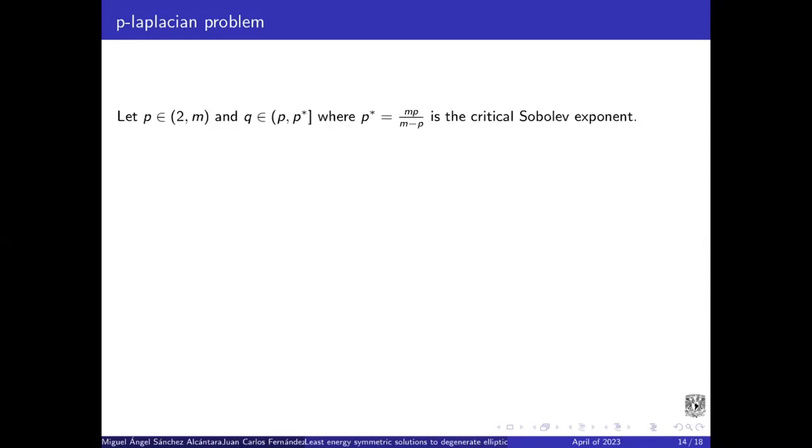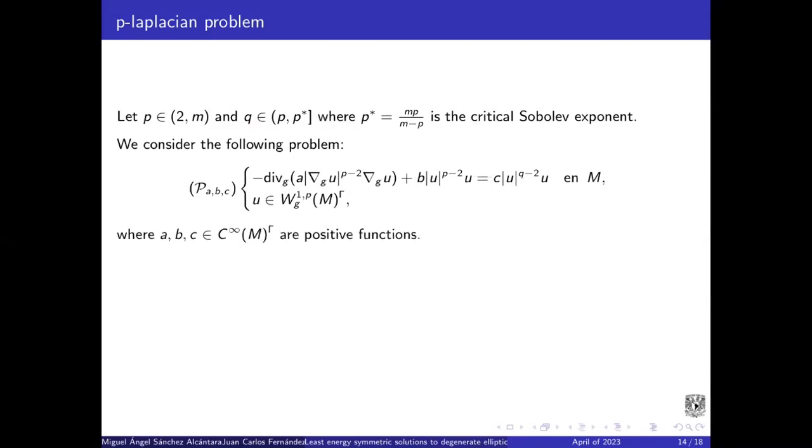Let p be a number on this interval and Q a number on this interval. And we consider the following problem. A, b, c are positive smooth functions that are Gamma invariant. And we say that a function on this space is a weak solution of this problem if for every element of the Sobolev space, we have the next equality.